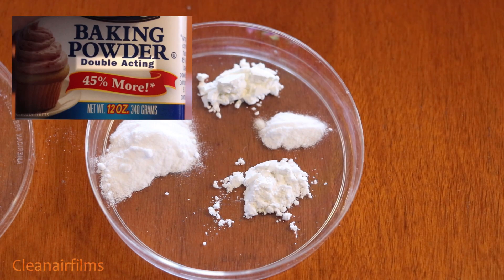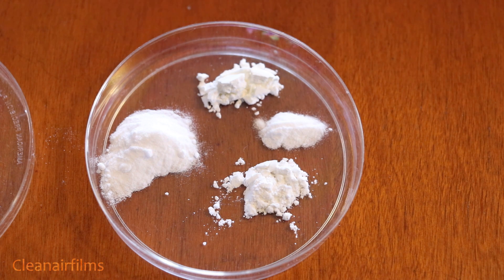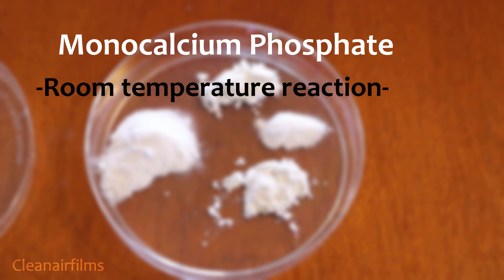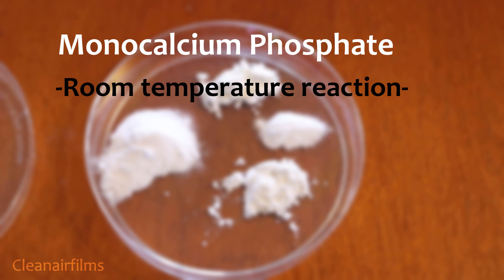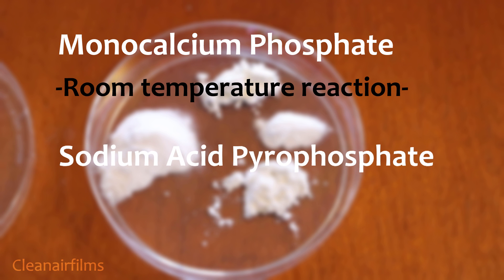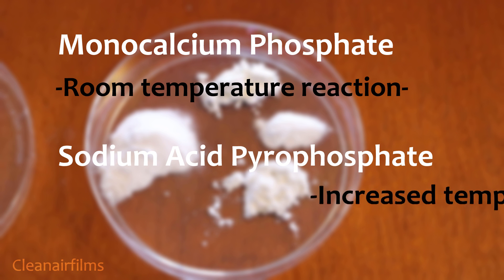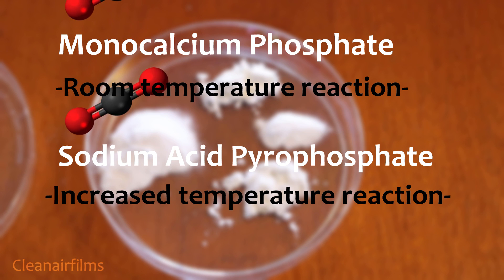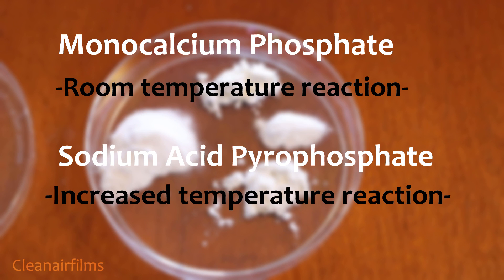Double-acting baking powder contains two acid salts that will react at different temperatures. The monocalcium phosphate will react immediately with sodium bicarbonate when they are mixed together in a dough. The sodium acid pyrophosphate will react later during the cooking process to release more carbon dioxide gas. The ingredients in baking powder are proportioned to react completely so the dough's pH does not change.